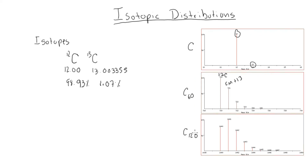With carbon-120, or 120 carbons, the base peak is actually the M+1 ion instead of the monoisotopic mass. This is because once you have 120 carbons, it is more likely that at least one will be carbon-13, since the abundance of carbon-13 is 1%. This illustrates that picking your monoisotopic peak is not as simple as just picking the most abundant peak or base peak in the spectra.